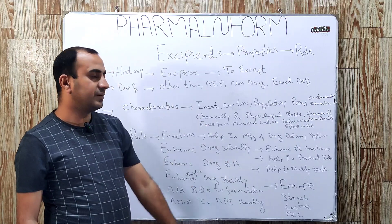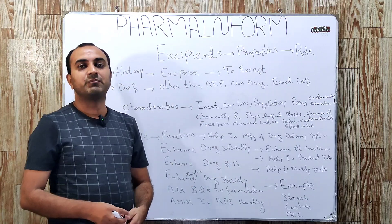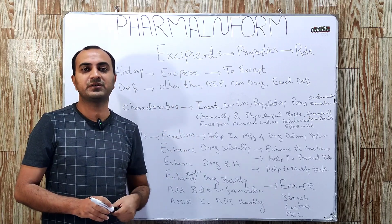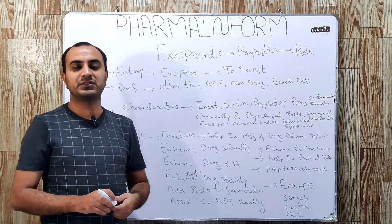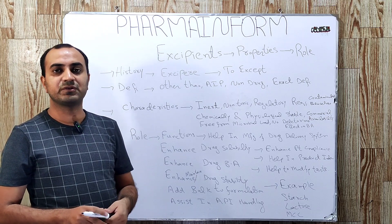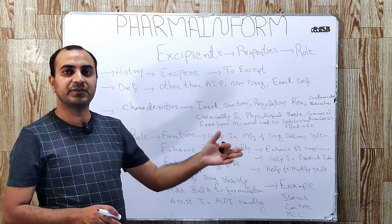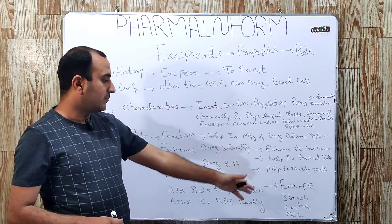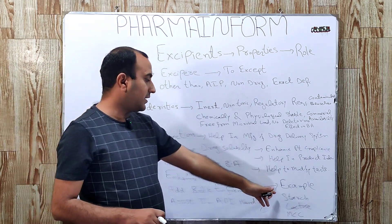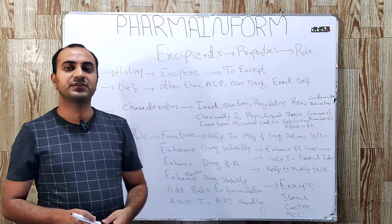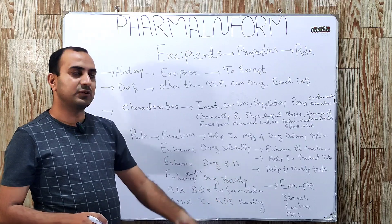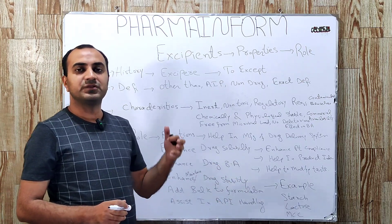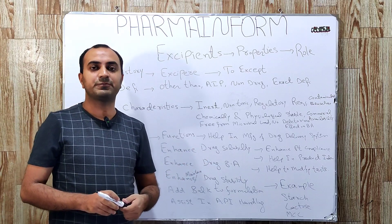What are examples of excipients? There is a huge list. In the next video we will discuss the classification system and detailed examples, but some common examples include starch, lactose, and microcrystalline cellulose.